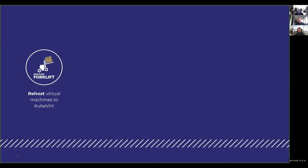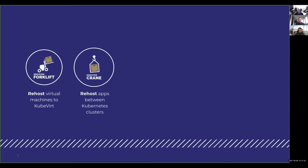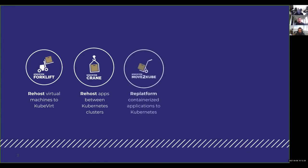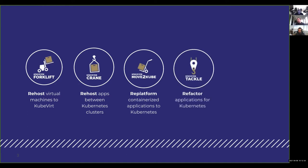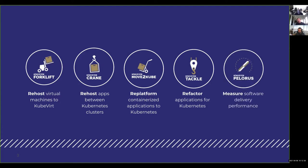You can see these projects mapped out: Forklift to re-host virtual machines, Crane to re-host containers, Move to Kube to re-platform, Tackle to refactor Java applications to Kubernetes, and Pelorus to make the measurements.